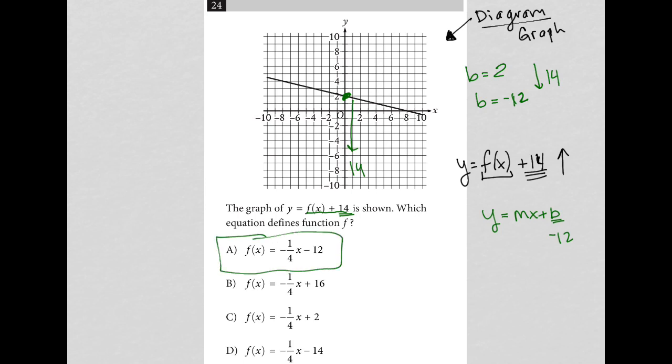So choice A must be the correct answer. There's no need to check anything else. There's no way that our y-intercept is positive 16, positive 2, or negative 14.